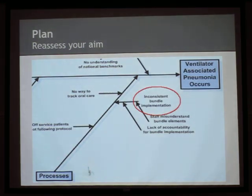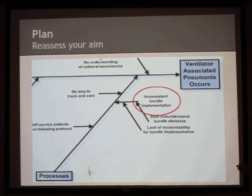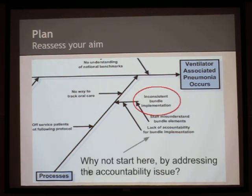Let's look at our fishbone diagram. This one is for ventilator-associated pneumonia, and one highlighted root cause is inconsistent bundle implementation. We've done a broad root cause analysis and have opportunities for many PDSA cycles. We're going to start with inconsistent bundle implementation and focus on oral care specifically. We also want to note: why wouldn't we start with 'lack of accountability' since it appeared in the root cause analysis? Because you're trying to build a collaborative team — you don't want to start by finding villains.